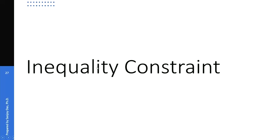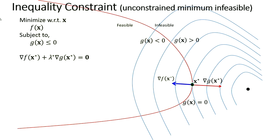Next we consider inequality constraints, looking at a single inequality constraint. The constrained optimization problem is: minimize f of x subject to g of x less than or equal to zero. The red curve represents g of x equals zero. The shaded region where g of x is strictly less than zero is feasible, along with the red curve itself. The unshaded region where g of x is greater than zero is infeasible.